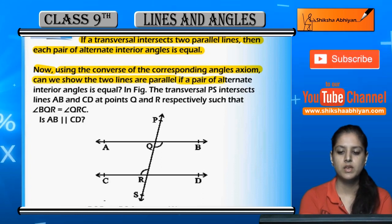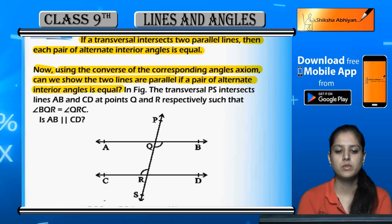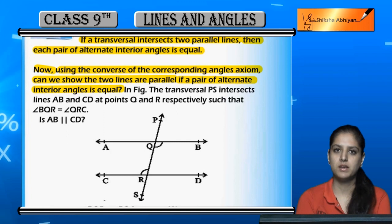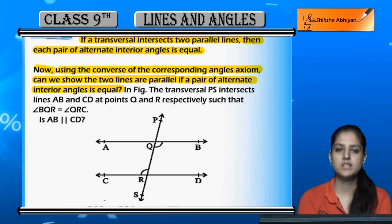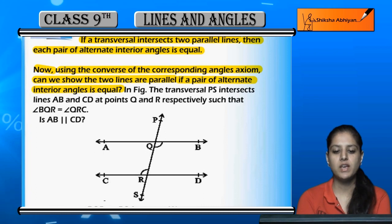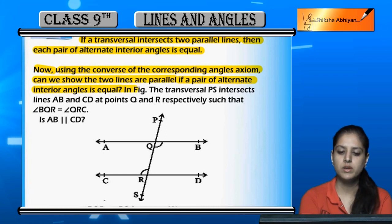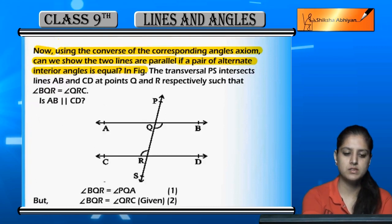We have studied the theorem. So if we look at the converse of this theorem - if alternate interior angles are equal, will the lines be parallel? Is this possible? In this figure you can see...